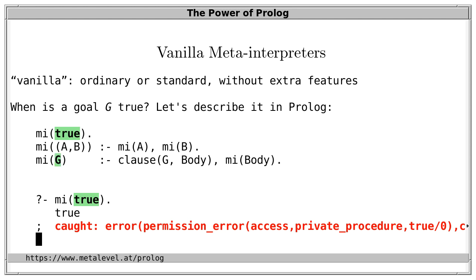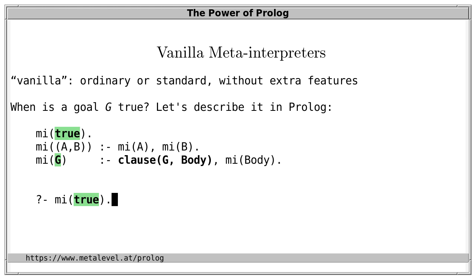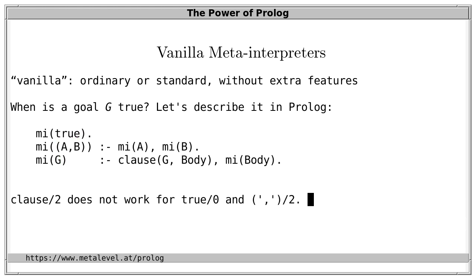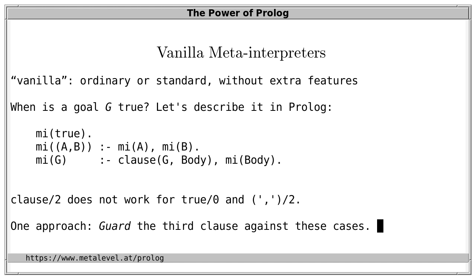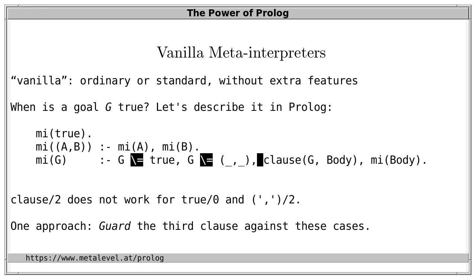Does the goal 'true' hold? Yes, as intended. But on backtracking we get an error. Why? Because for the atom true, the first clause applies — as intended — but the last one also applies. That's not intended because the built-in predicate 'clause' doesn't let us inspect the definition of the built-in predicate true. So this definition is not yet correct. We don't only have a problem for true but for conjunction too, because the last clause also applies for conjunctions, and clause again yields an error.